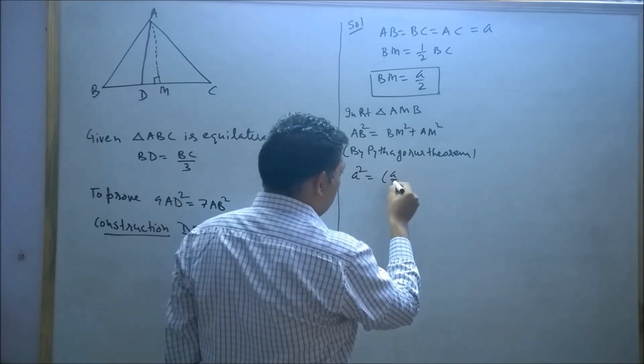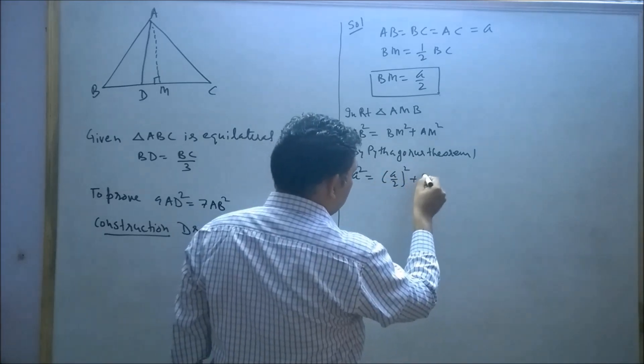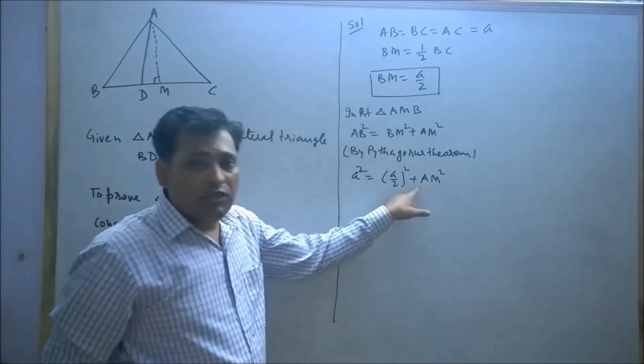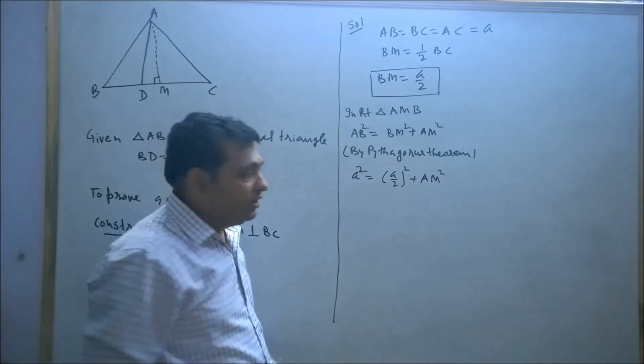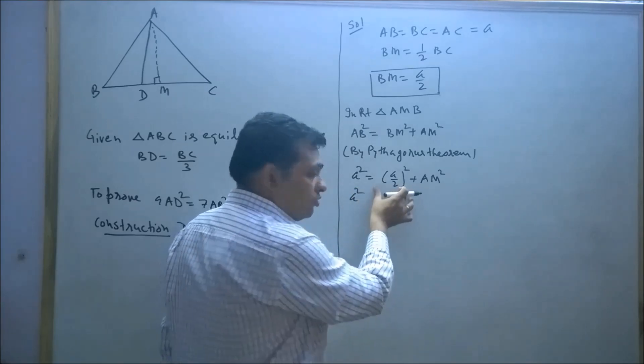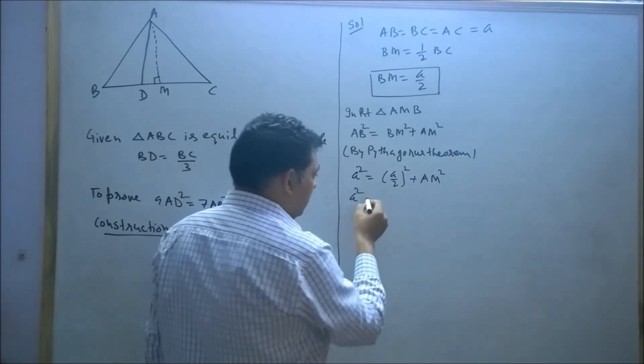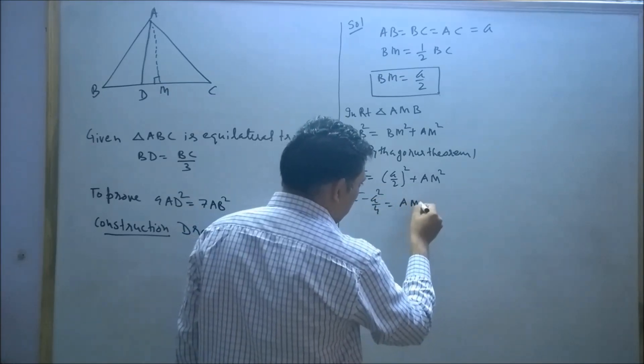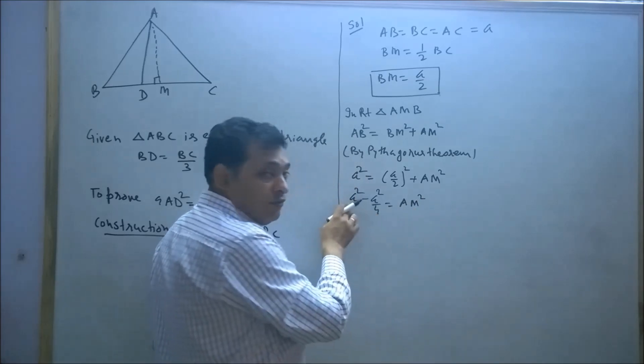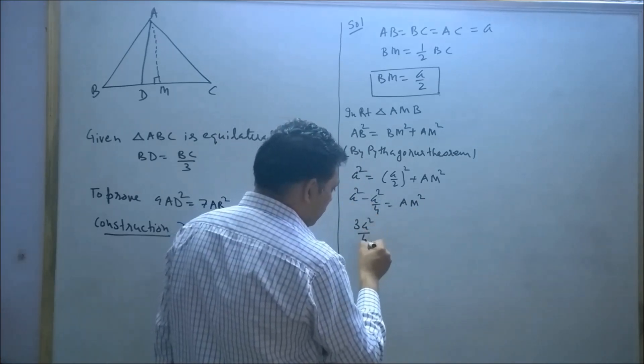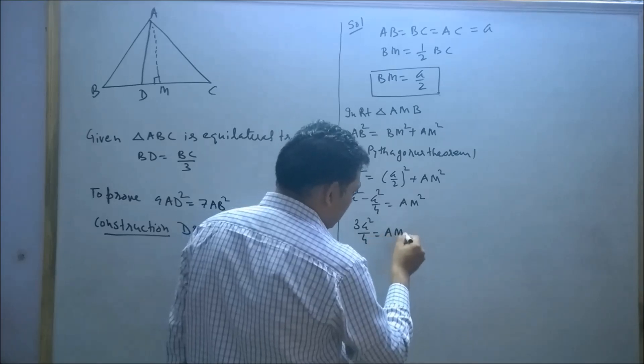So a² equals (a/2)² plus AM². Now convert AM² in terms of a. Transpose a²/4 to the left hand side: a² minus a²/4 equals AM². This gives 3a²/4 equals AM².